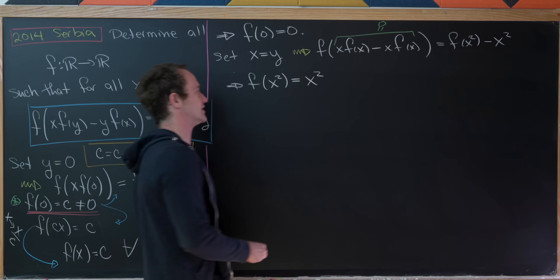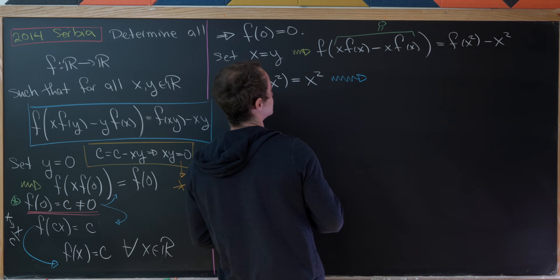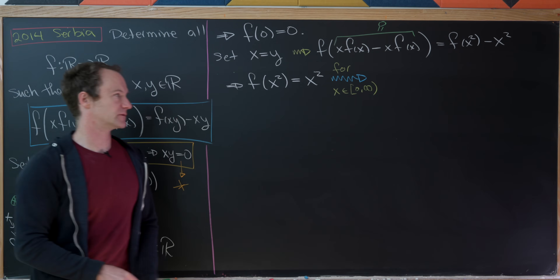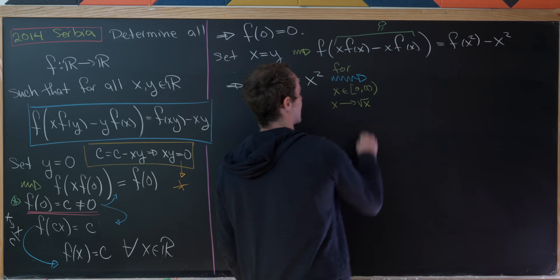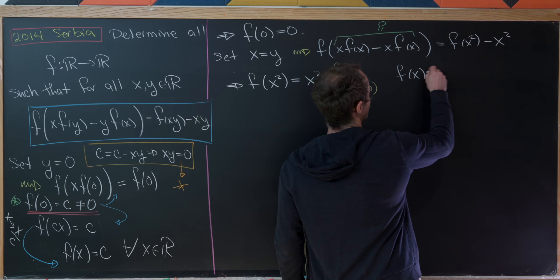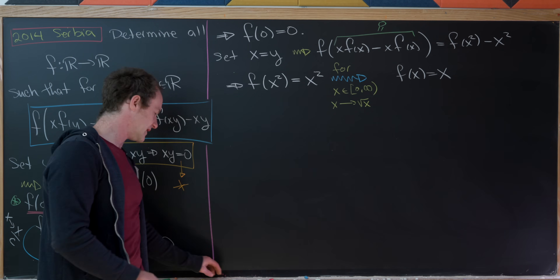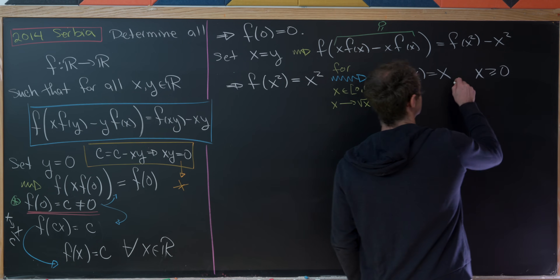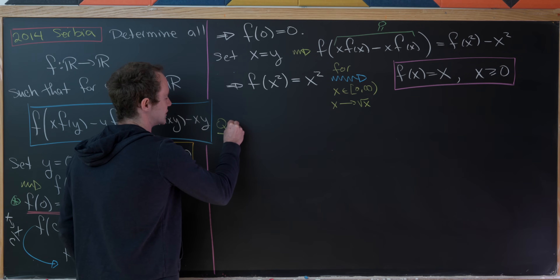Now we do a change of variables, but it only works for non-negative values of x — on the half-open interval [0, ∞). We replace x with √x, giving f(x) = x. So for all x ≥ 0, f(x) = x. That's our partial solution, which raises the question: what about f of negative numbers?